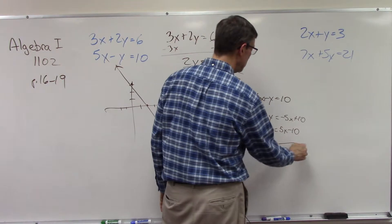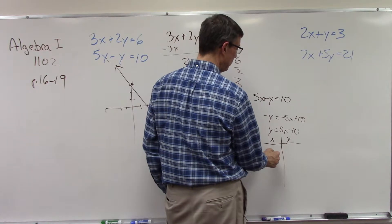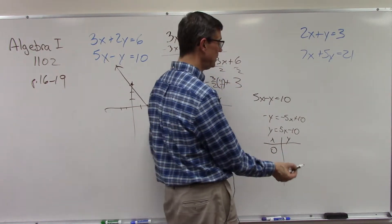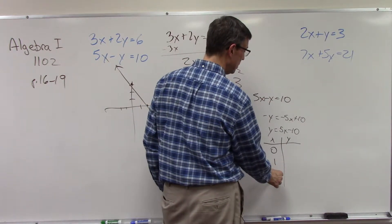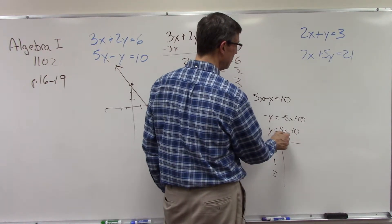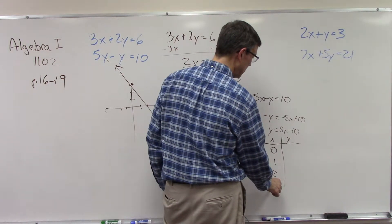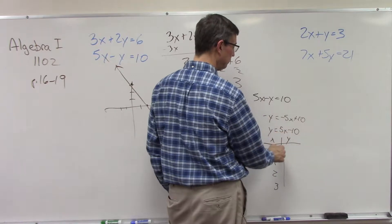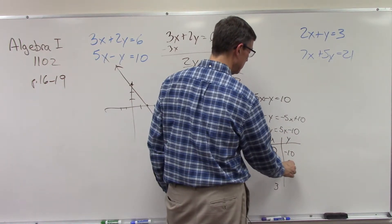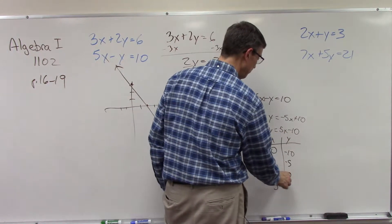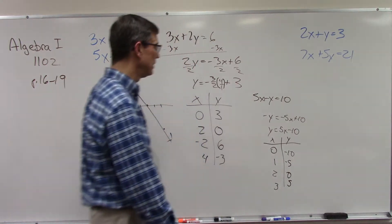Now it makes it real easy to set up a table of values. Plug in for some x values, solve for y. We always start with zero, that's the easy one. We could do 1, we could do 2. Negative 1 would actually give me negative 5, which would make it negative 15, which is kind of far off the graph. What if I did 3? Plug in 0 and I get negative 10. Plug in 1 and I get 5 minus 10 is negative 5. 10 minus 10 is 0.